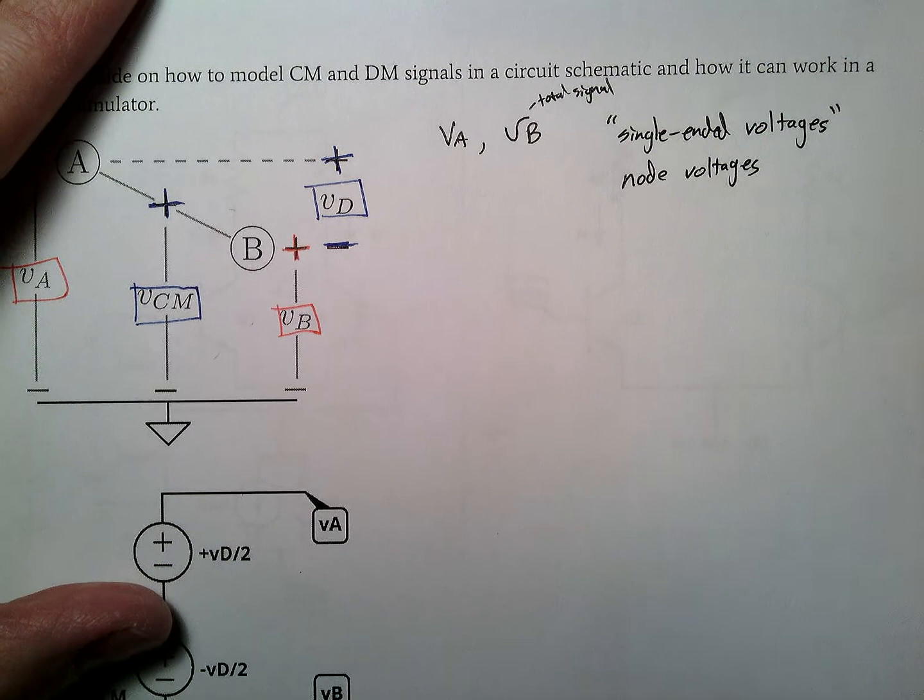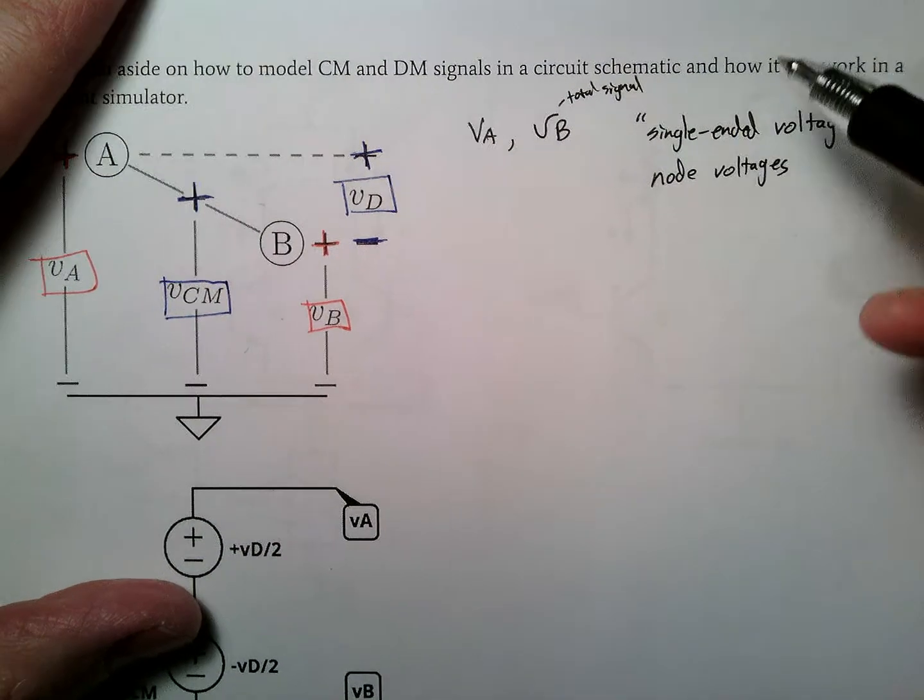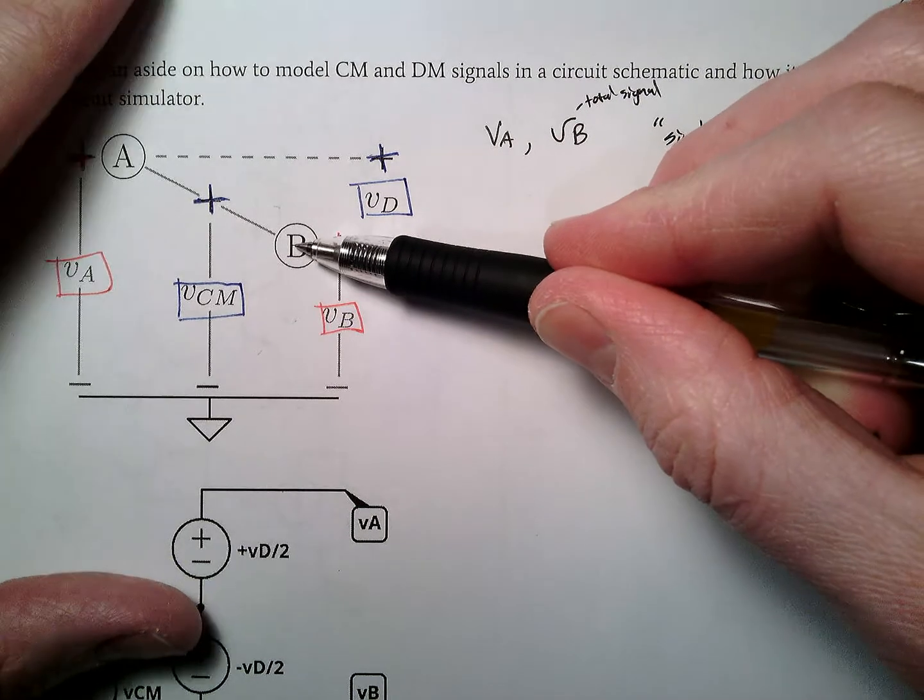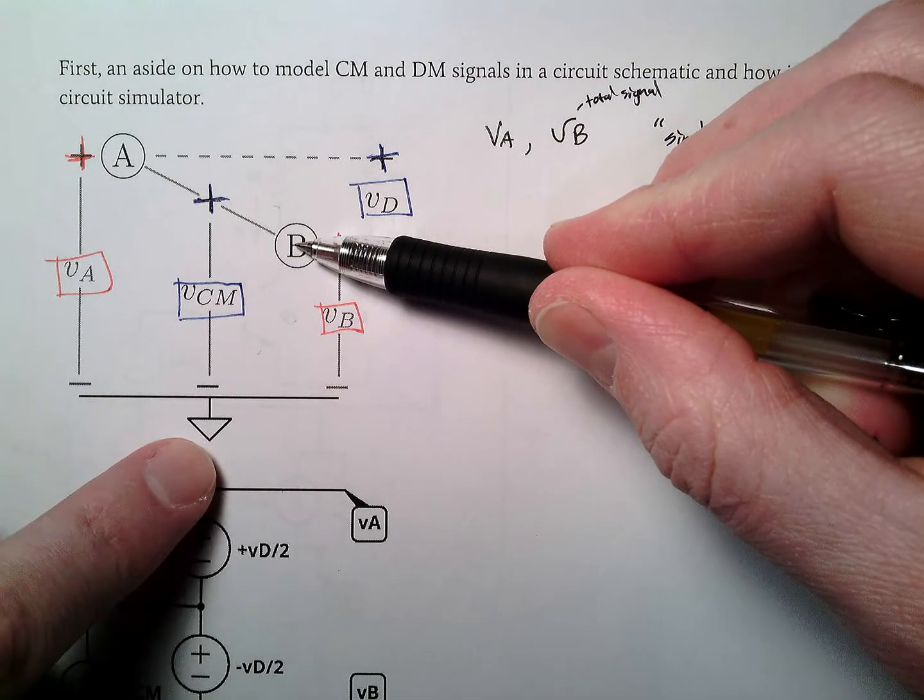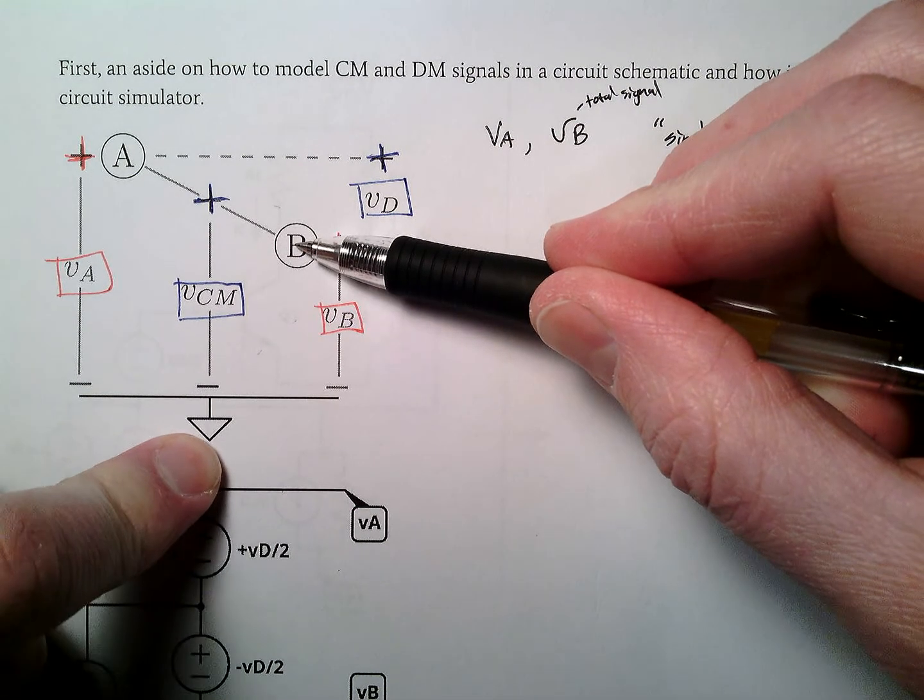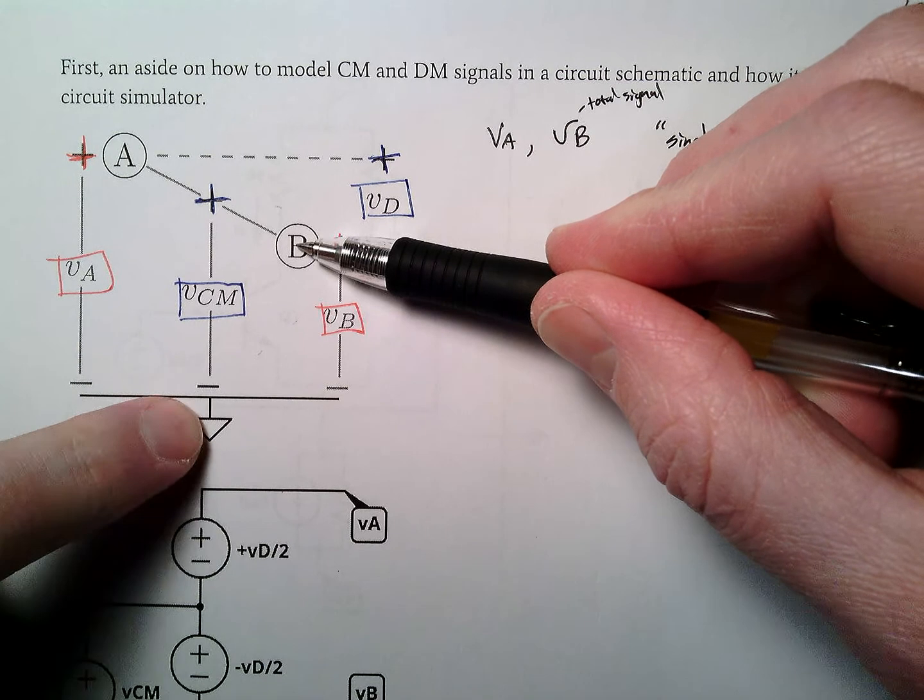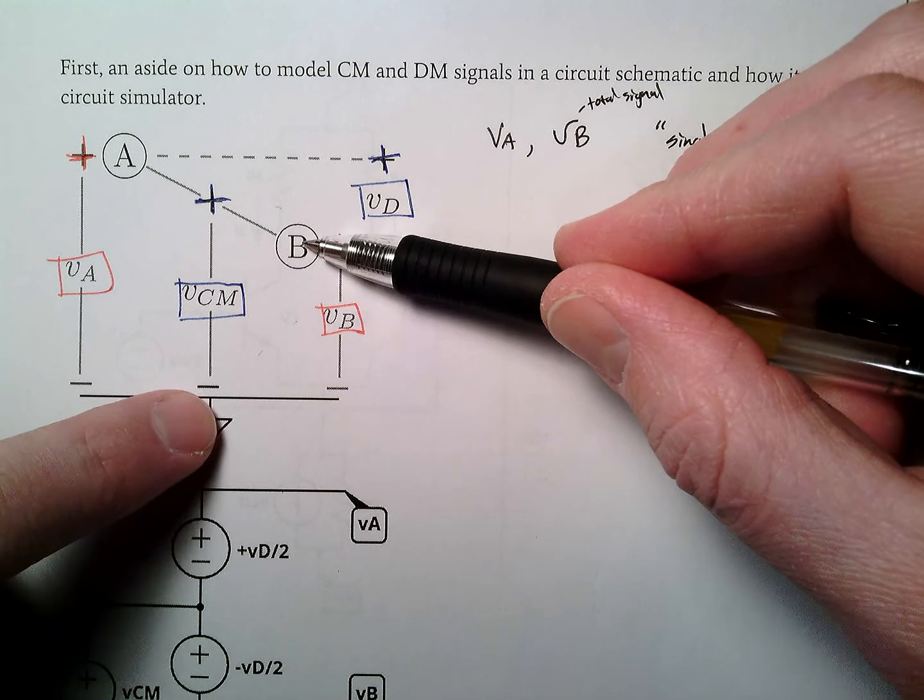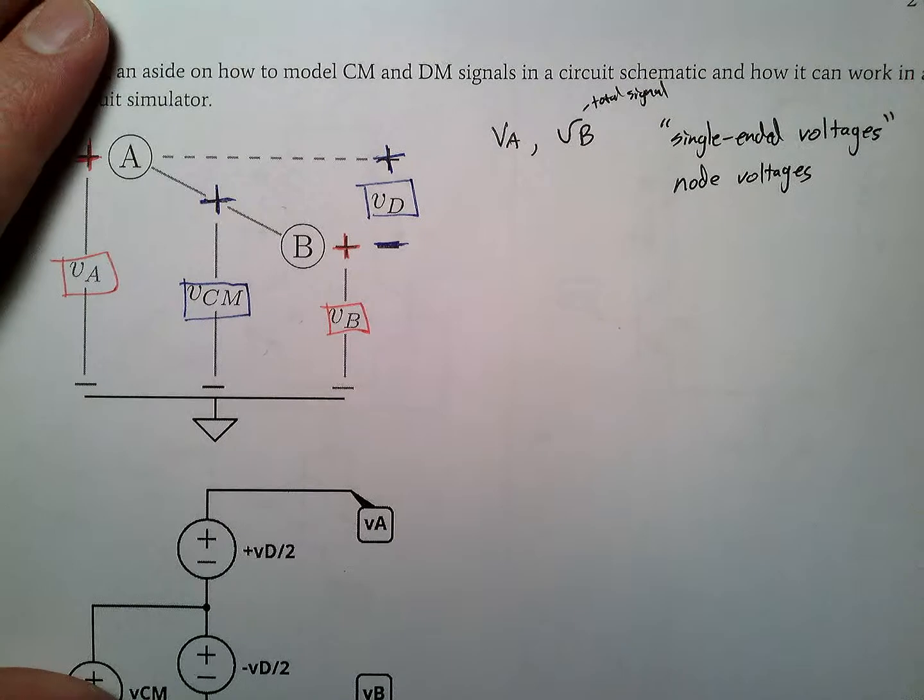I might slip up and use that term, single-ended voltages. We also call these node voltages. So it's really saying the same thing. Single-ended, which means we only have our multimeter wire on B. That means our minus wire is always attached to our zero-volt reference. Notice how it didn't say ground symbol. This is our zero-volt reference, so it's B minus zero.